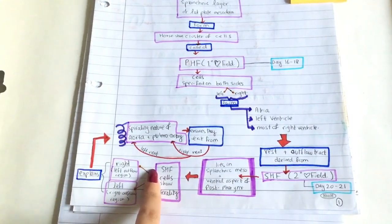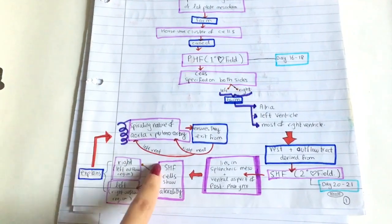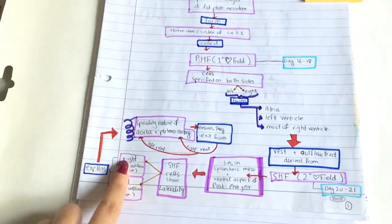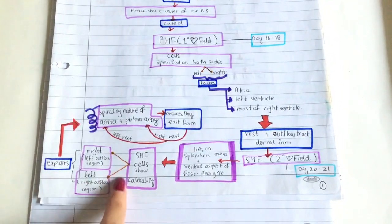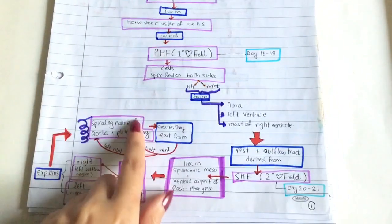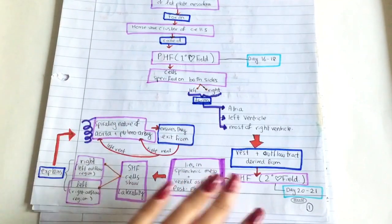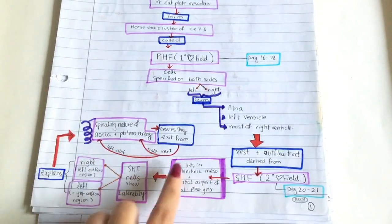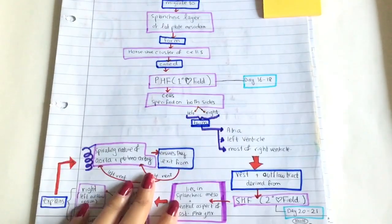The secondary heart field cells show laterality. It's opposite. The right side forms the left outflow region, and the left side forms the right outflow region. This explains the spiraling nature of the aorta and pulmonary artery, because they're from opposite sides. This ensures that they exit from the right ventricle and the left ventricle in the heart that we now know.